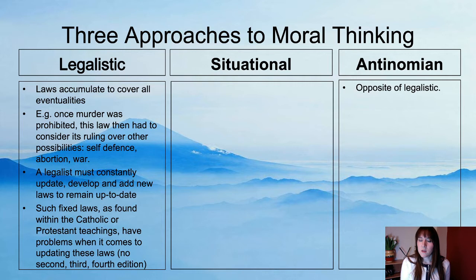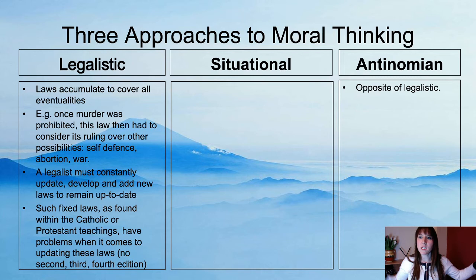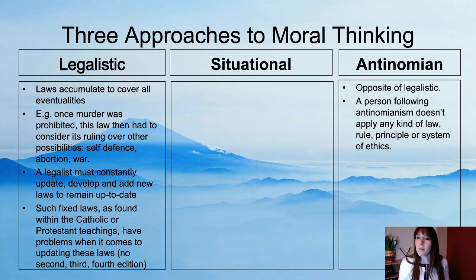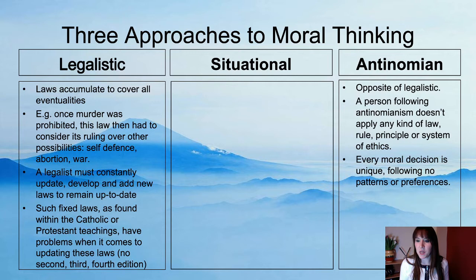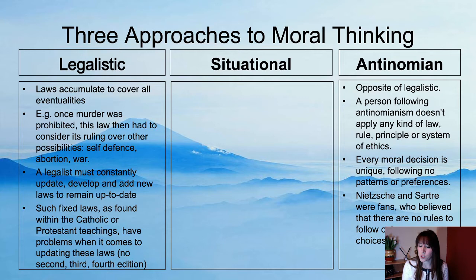Antinomianism, quite a mouthful, is completely the opposite of legalistic — they are absolutely bipolar opposites. A person following antinomianism doesn't apply any kind of law, rule, principle or system of ethics. Every moral decision is unique, following no patterns or preferences. Nietzsche and Sartre were fans of this — they believed there are no rules to follow, only your own choices. Quite a 'do what you want' sort of approach, and quite a risky one when taken to its full extreme.